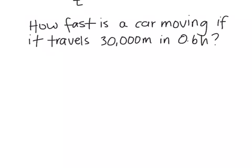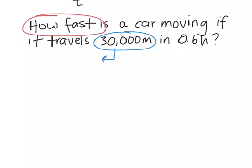So here it doesn't ask us directly what speed. The term how fast implies speed. We have a distance, so 30,000 meters, and we have a time in hours.